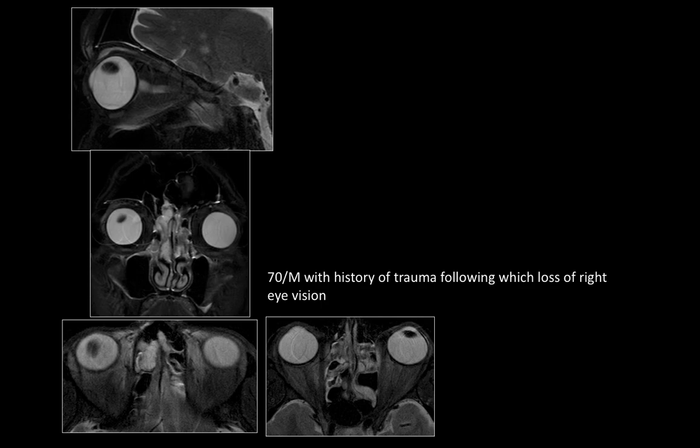This 70-year-old male with history of trauma and vision loss: on T2 sagittal, coronal, and axial images, the lens is displaced superiorly and posteriorly into the vitreous humor, compared to the normal position of the left lens shown for comparison. This is traumatic dislocation of the lens.